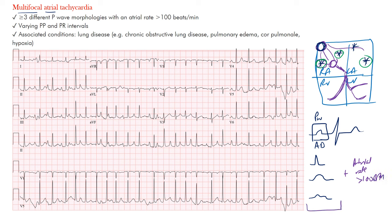If you just have the multiple P-wave morphologies without the fast rate, that's considered wandering atrial pacemaker. When you add the fast atrial rate — that combination is what makes it MAT, multifocal atrial tachycardia.